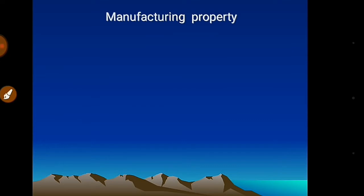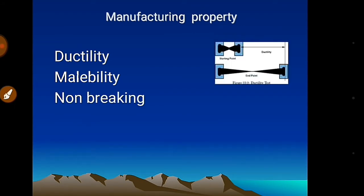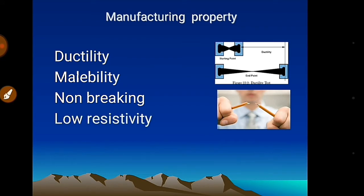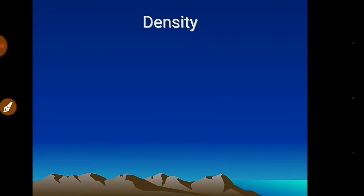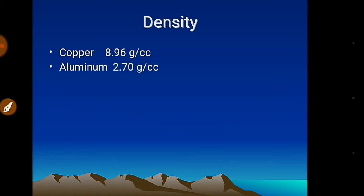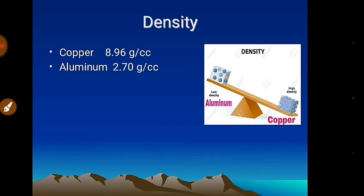Copper and aluminium have all the properties like ductility, electrical conductivity, malleability, and flexibility to manufacture wire. Copper has a density of 8.96 g/cc, while aluminium is 2.74 g/cc. Comparing the two, aluminium is three times lighter than copper, which reduces cable weight and cost.